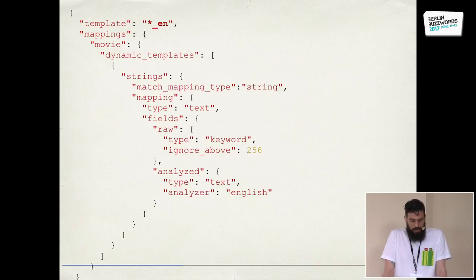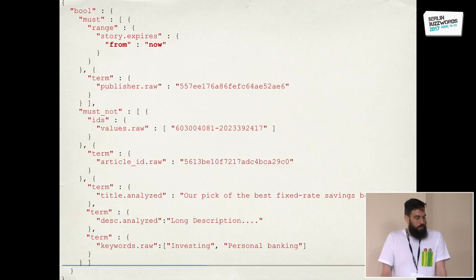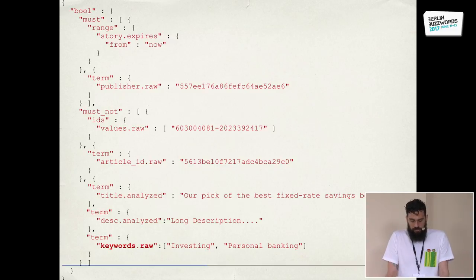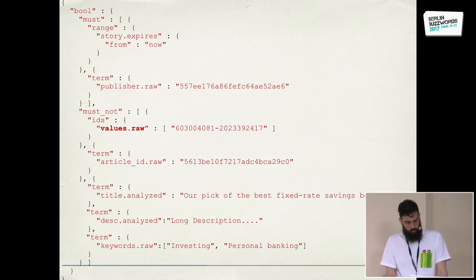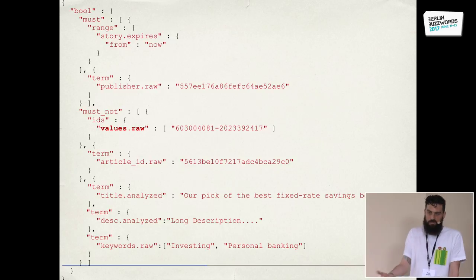Using this template, we could dynamically add languages and indexes without wasting time on too many settings, which reduced unplanned work. The query we used was very simple — we put each field from our JSON object into a term query and filtered by time range. You can see we used the raw fields for things we had to exactly match, like IDs and keywords, and the analyzed field for the title and description. We also filtered out the current article we are generating suggestions for, because each article always matched itself.